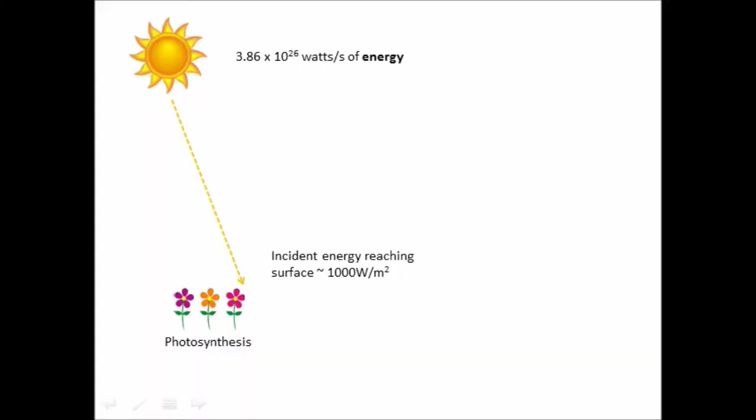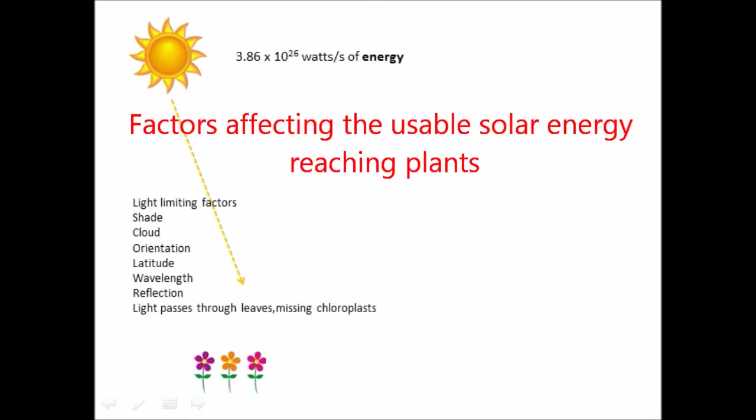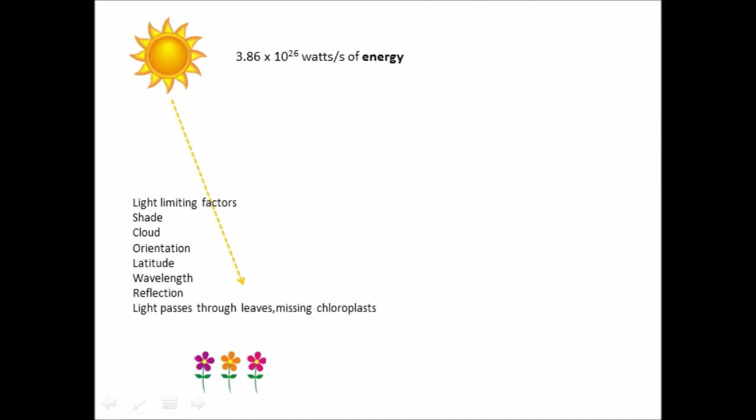Only a very small proportion of the energy leaving the sun can actually be made use of by plants in photosynthesis. Other things like shade, so if they're shaded by trees or by other plants or by their own leaves, and the effects of cloud dissipating the sunlight will cause considerable loss of sunlight.